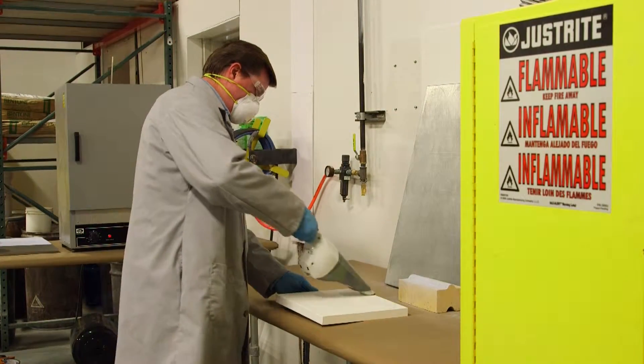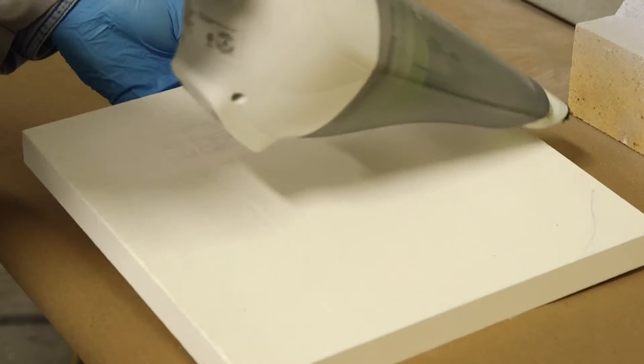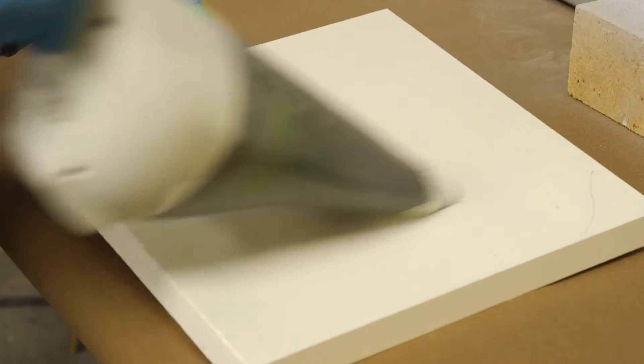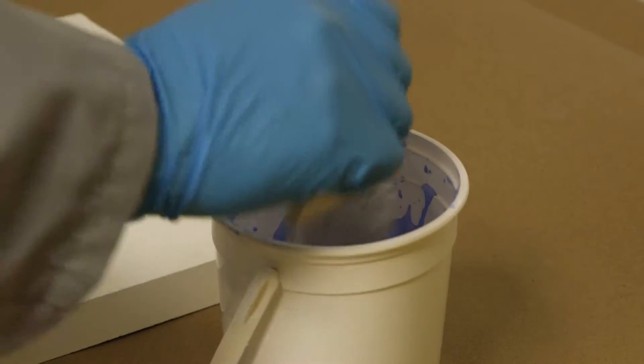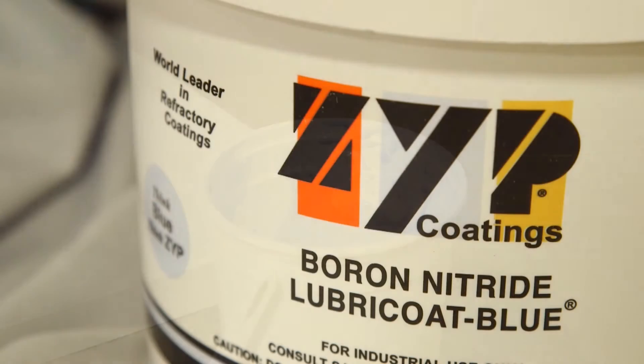Ceramic substrates should be vacuum cleaned or air blasted at the start, getting off all surface dust and contamination. To paint, merely dip the bristle brush into the undiluted BN Lubricote Blue.